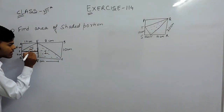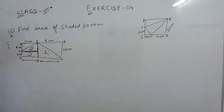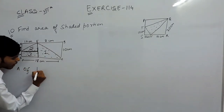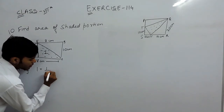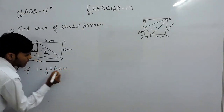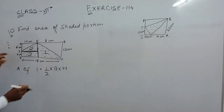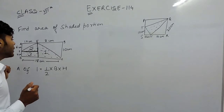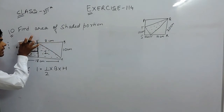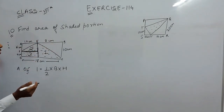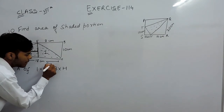Supposingly this is figure 1, this is figure 2, and this is figure 3. Now we can easily find the area of these. So area of figure 1 — this is a triangle, so area is equal to 1/2 into base into height. The base will be equal to 8 centimeters. This complete is 18 centimeters, this is 10 centimeters, and this is also 8 centimeters. So base will be 8 centimeters.